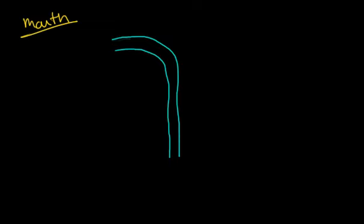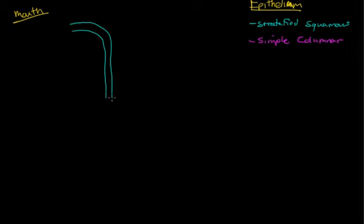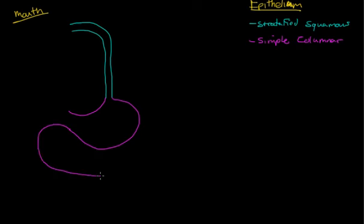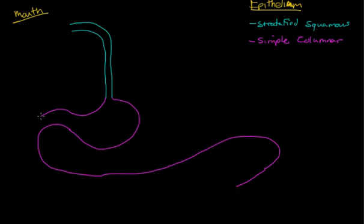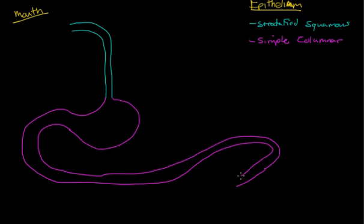Then we're going to move into the stomach, which is going to be simple columnar. And that's going to lead into your small intestine and then your large intestine — all simple columnar. When we get to the very end, the rectum and the anus are both going to go back to stratified squamous.